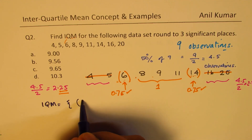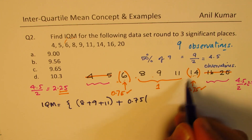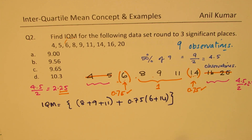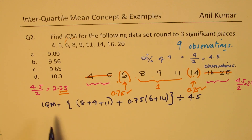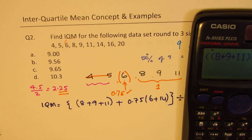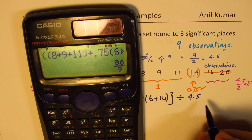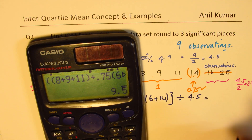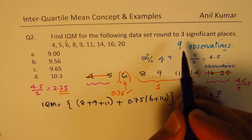The interquartile mean equals: the middle numbers 8, 9, and 11 added in full, plus 75% of the boundary values 6 and 14, all divided by 4.5 (which is 50% of 9). Calculating: (8 + 9 + 11) + 0.75 × (6 + 14), divided by 4.5, gives 9.555 recurring.